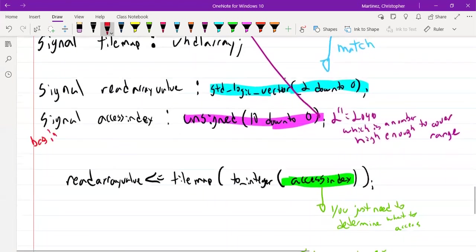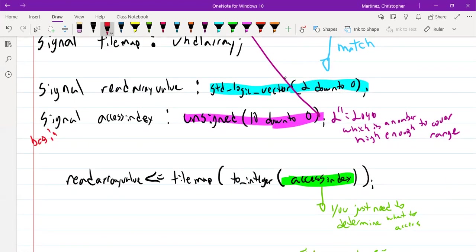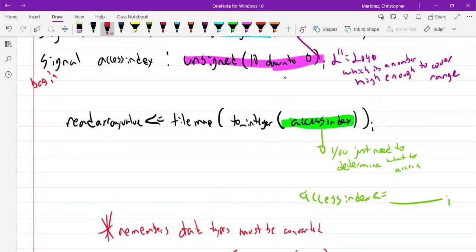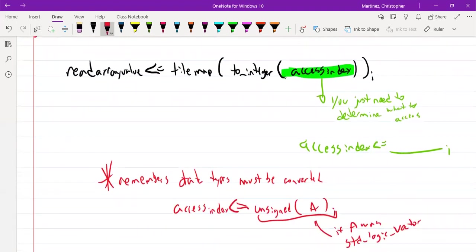Then in your code, you need to read it. You'll say the read_array_value is going to be assigned tile_map. Then you're going to put parentheses. The array needs an integer to access it, so we're going to do to_integer. And then in parentheses, we put the index that we want to access. At some point in your code, you need to figure out what the index is. Somewhere in your code, you'll have access_index is assigned some value. What you got to remember is data types have to match. So you're probably going to need to do some converting. Let's say I had access_index is assigned unsigned in the parentheses A. If A was like a standard logic vector, I needed that unsigned to make the data type match. If A was unsigned, then I wouldn't need to do any conversion.